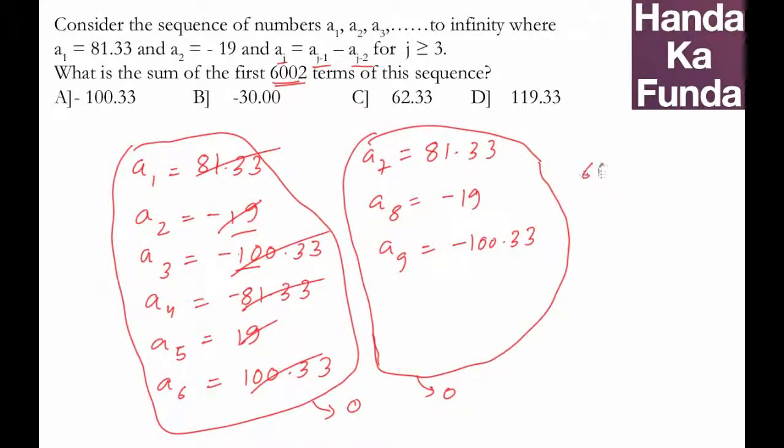As a matter of fact, the sum of the first 6000 terms will be nothing else but zero. So all we need to do is take the sum of the 6001st term plus the 6002nd term, and that will simply be a1 plus a2.